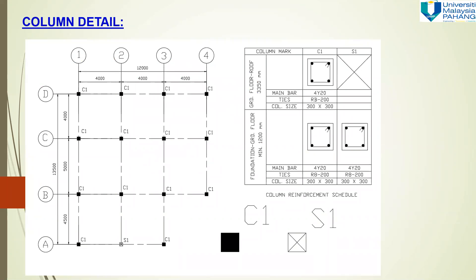Here we go — the column detail. You can see this in the column layout. This is the grid line, the dimensions, and the column. In this example, I only have C1 and S1. We will take a look at the meaning and interpretation of these two columns.